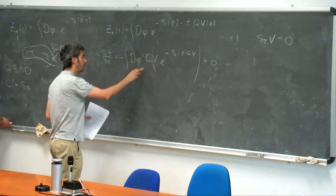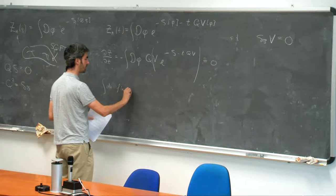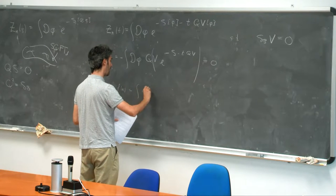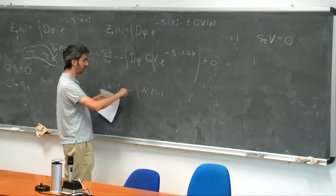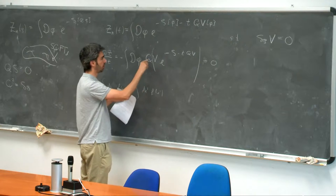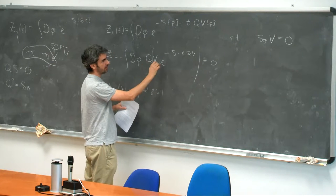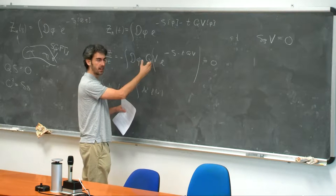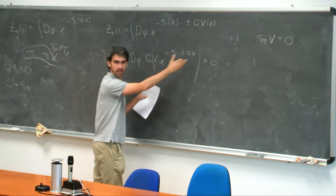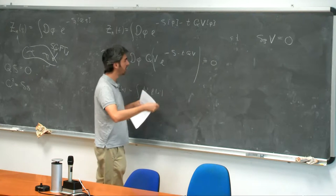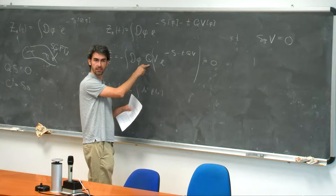If this was a bosonic symmetry, I would say: if you compute the integral in dx of some function of x, this is the same as the integral in dx prime of x prime, because it's just a field redefinition. If I take the infinitesimal version, the difference of the two is the action of the bosonic symmetry, and so this object would be zero. Now this is fermionic, so maybe we have to be a little bit more careful, but in fact it's exactly the same thing, because a fermionic symmetry acts like a derivative — essentially a derivative. So this is an integral of a total derivative.